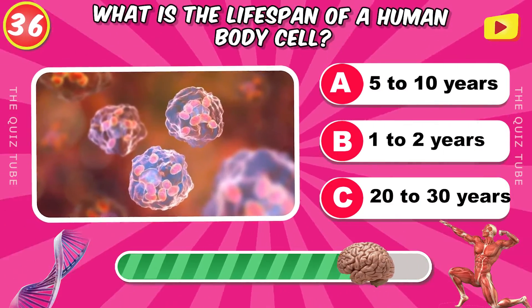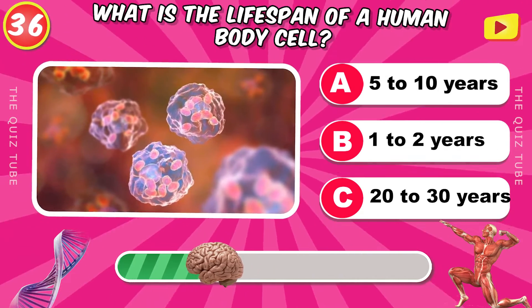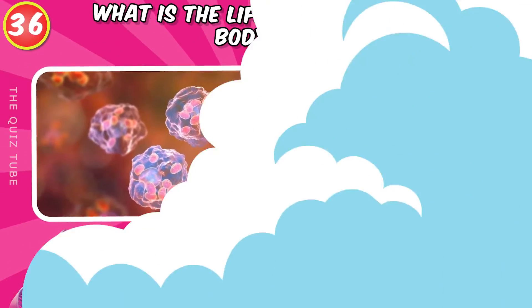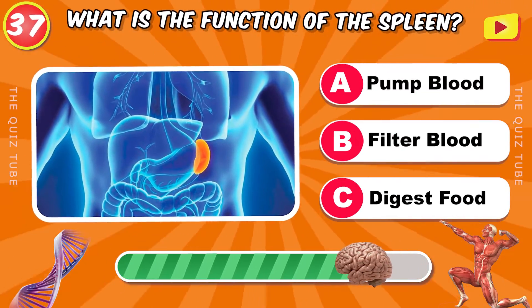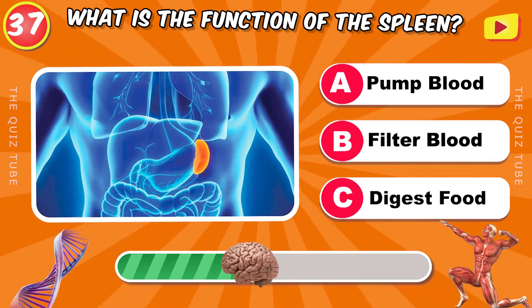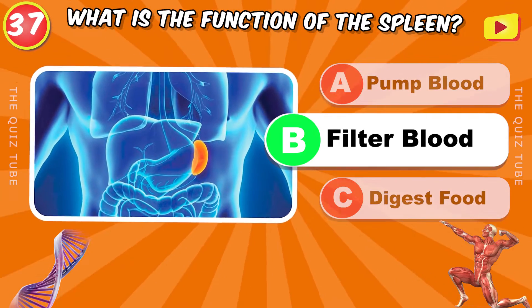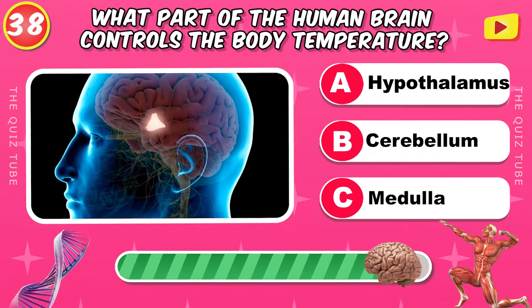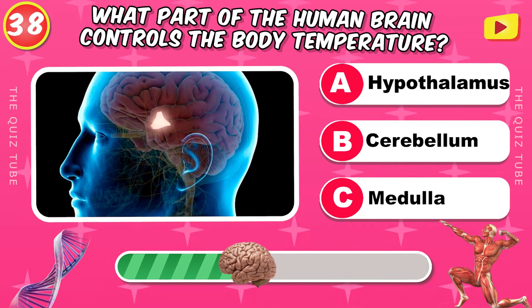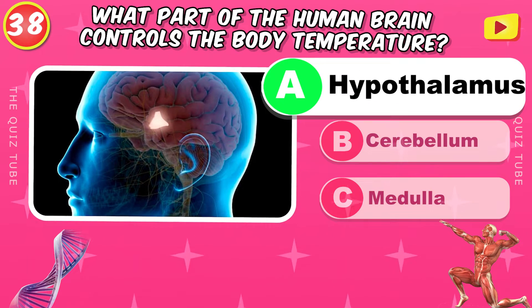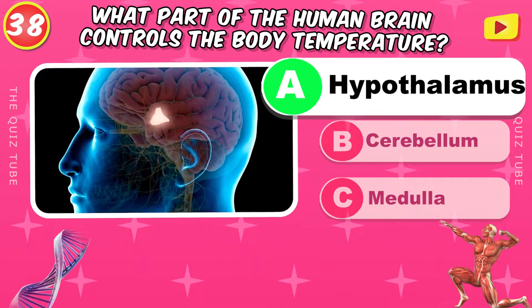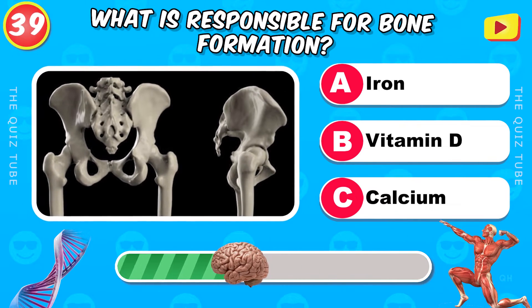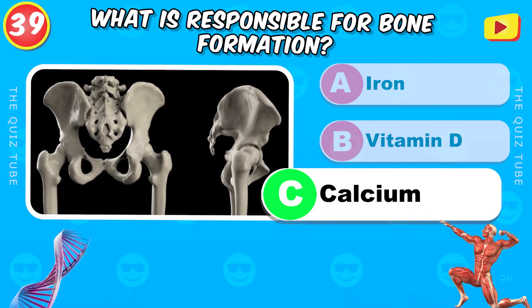What is the lifespan of a human body cell? 5 to 10 years. What is the function of the spleen? To filter blood. What part of the human brain controls body temperature? The hypothalamus. What is responsible for bone formation? Calcium.